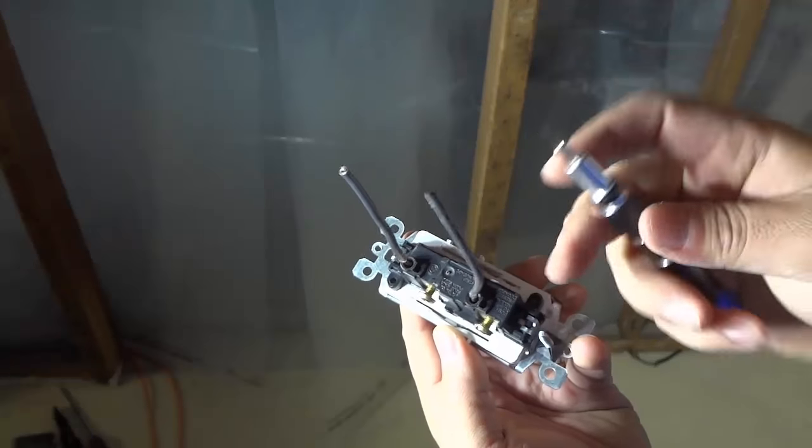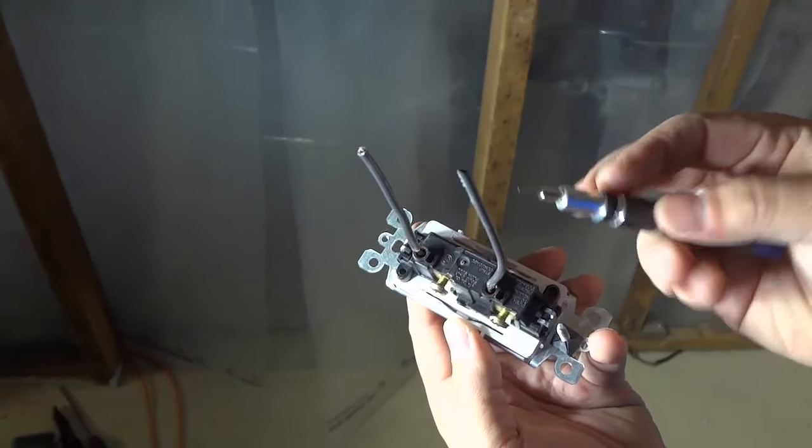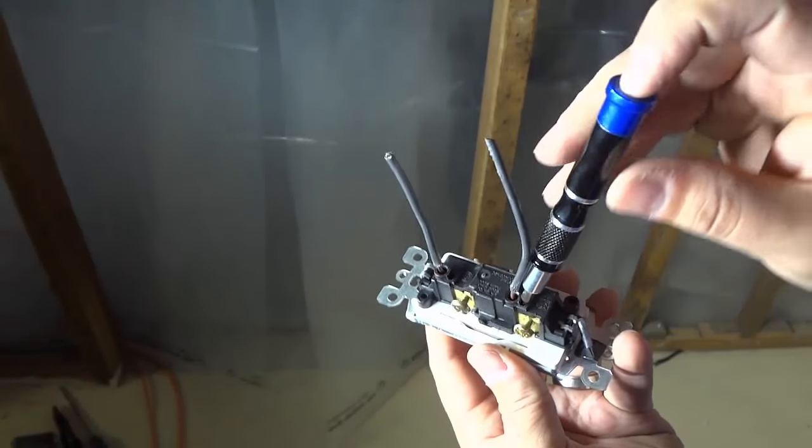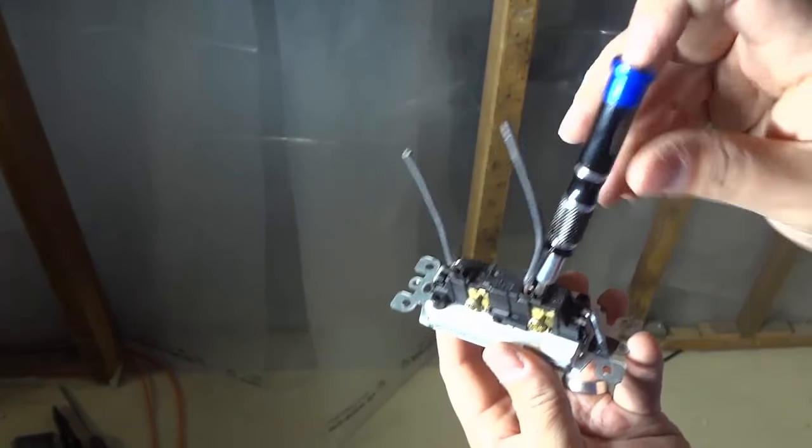What you need to do is take a small flathead screwdriver and you're simply going to press it into the slot and press it down into the slot, and as you are pressing it down into the slot you can simply pull the wiring out.